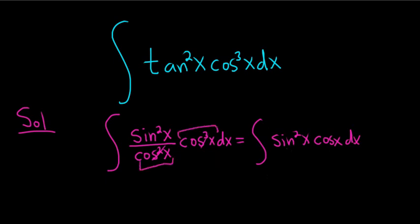And now it's pretty simple. Now you can just do a u sub, right? You would let u be sine x, because then du is going to be cosine x dx, boom. Works out beautifully.